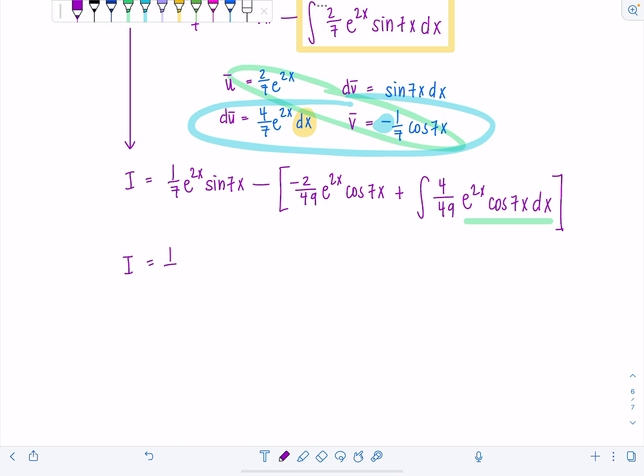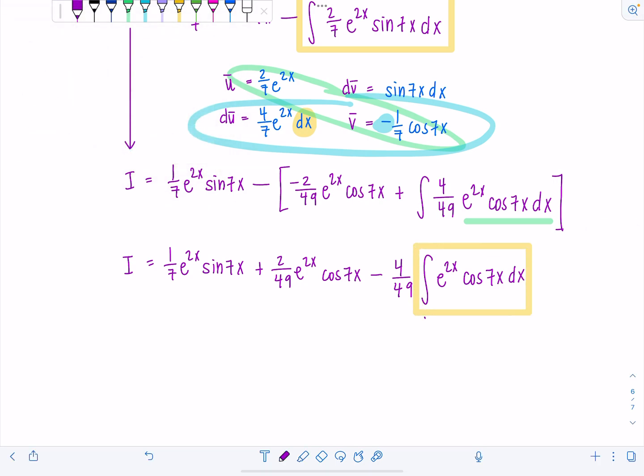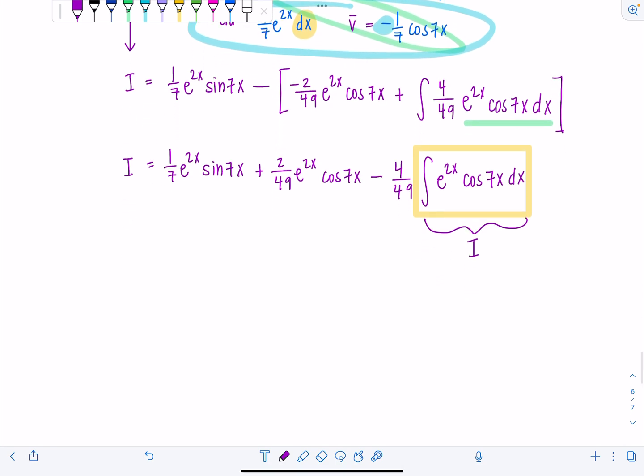This is I equals 1/7th e to the 2x sine 7x plus 2 over 49 e to the 2x cosine 7x minus 4 over 49 and then this is integral e to the 2x cosine 7x dx. Remember this integral is what we called I originally. So I'm actually going to replace it with that and solve for I. I'm going to add 4 over 49 I to both sides. I have 1I plus 4 over 49 I. So that's 49 over 49 I plus 4 over 49 I. So now this is 53 over 49 I.